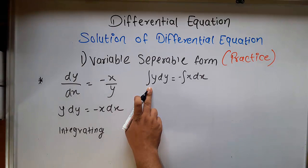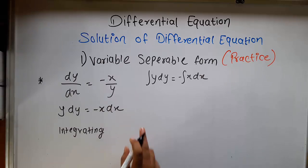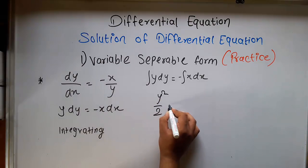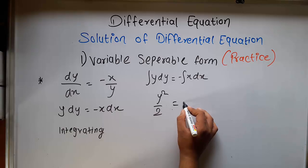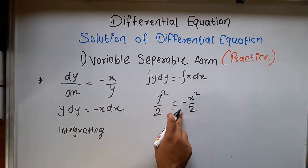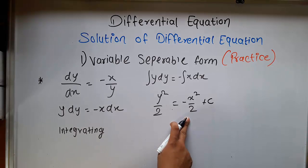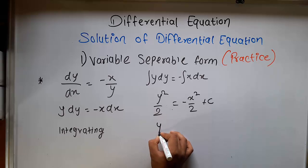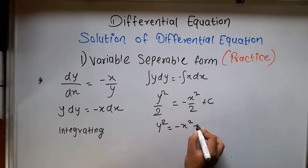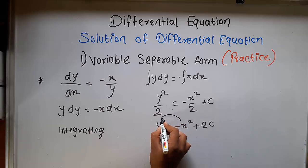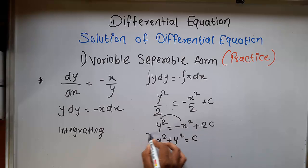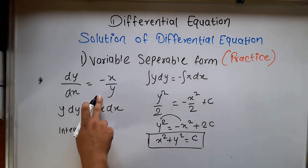What is the integration of y dy? It is y square by 2. The integration of minus x dx is minus x square by 2, because the minus sign is there, plus c. Now we try to remove this 2, so multiply throughout by 2. It forms y square equal to minus x square plus 2c. We can write 2c as c, because it is a constant. So it forms x square plus y square equal to c. This is the solution of this differential equation.